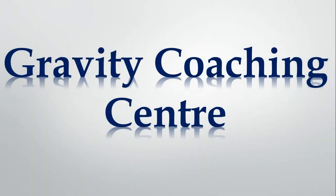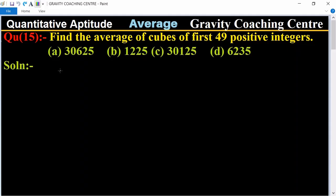Welcome to our channel Gravity Coaching Centre. Quantitative Aptitude chapter: Average. Question number 15: Find the average of cubes of first 49 positive integers.